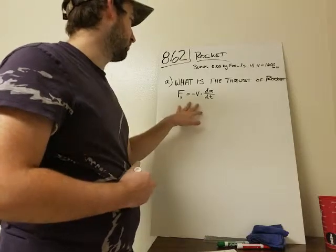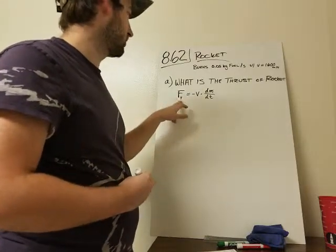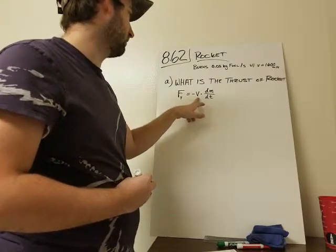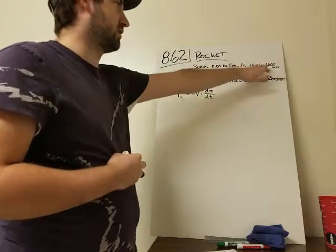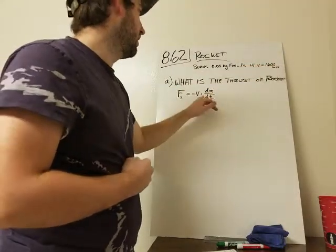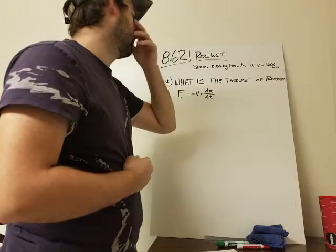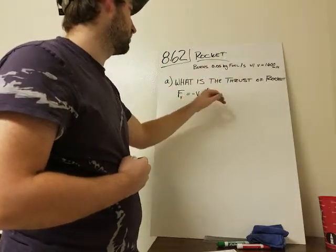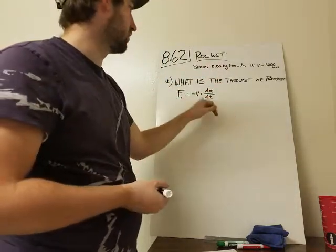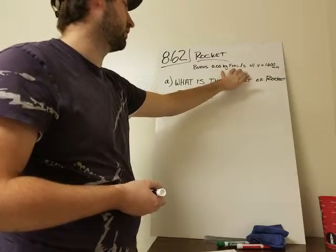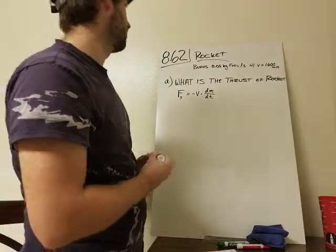So I've already written down the thrust equation. The force of thrust equals the negative velocity, and that's the velocity of the ejected gas, times the change in the mass as it correlates to change in time, which we already have right here. So really, this is quite simple.